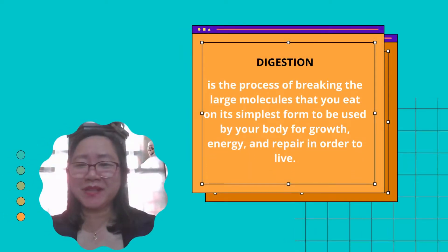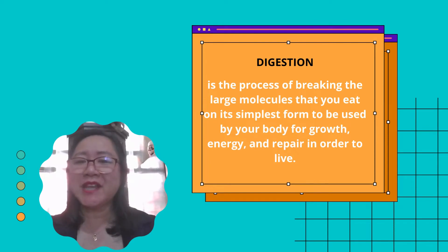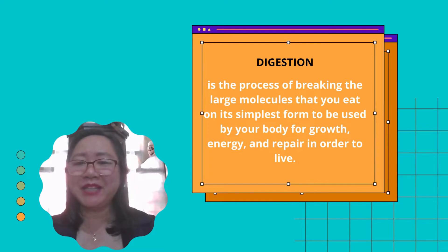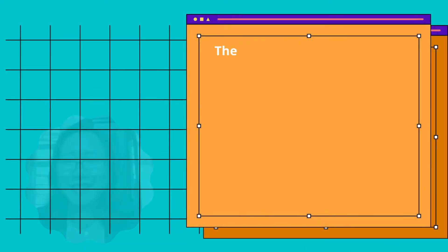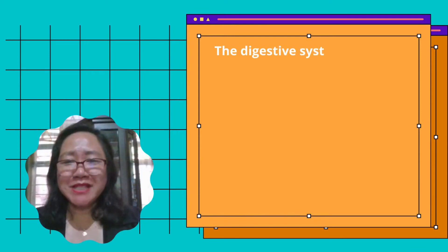Digestion is the process of breaking the large molecules that you eat into their simplest form, to be used by your body for growth, energy, and repair in order to live. The digestive system breaks down food in two ways.